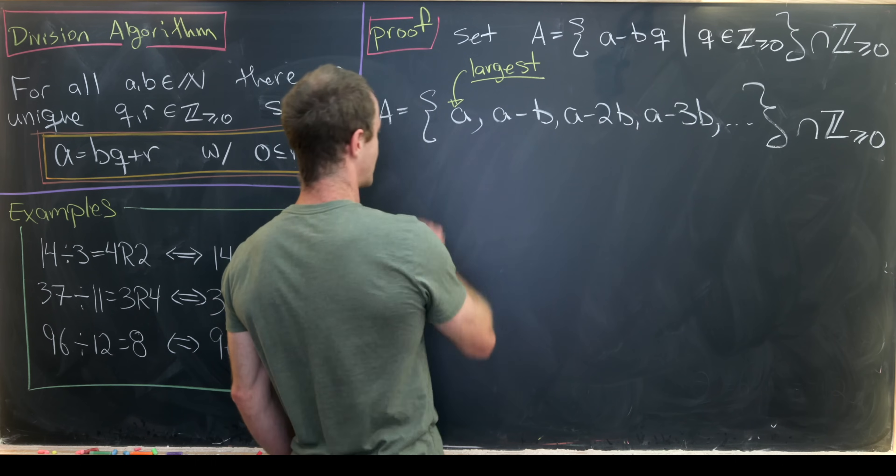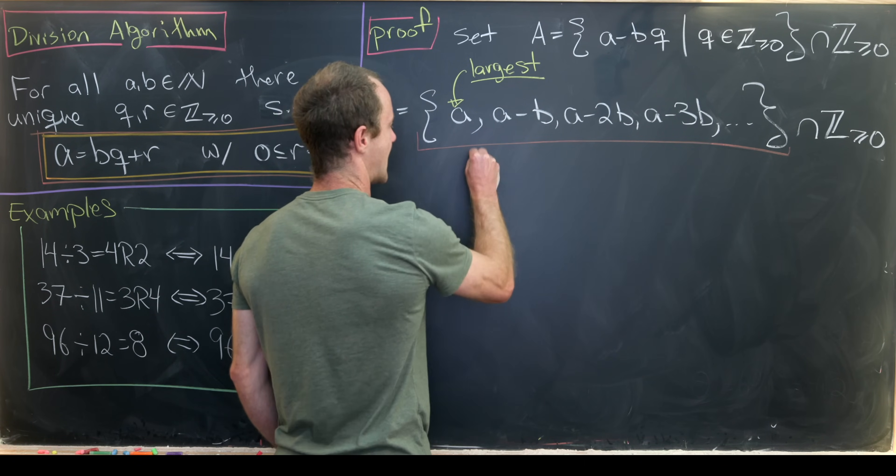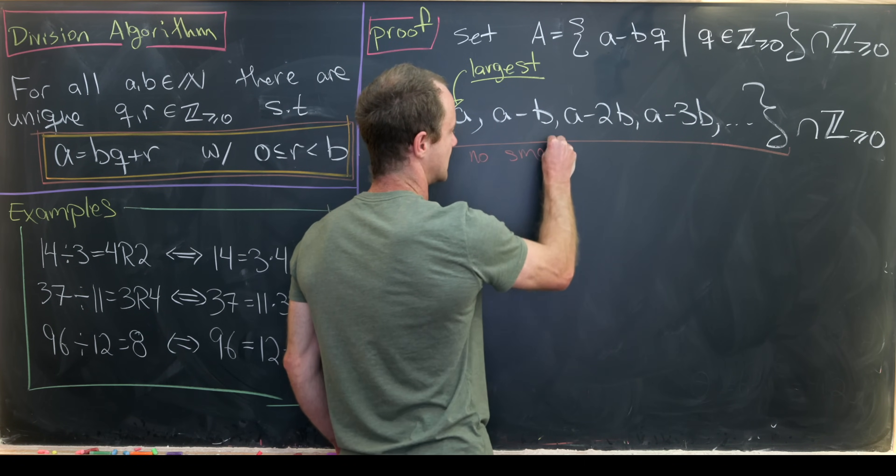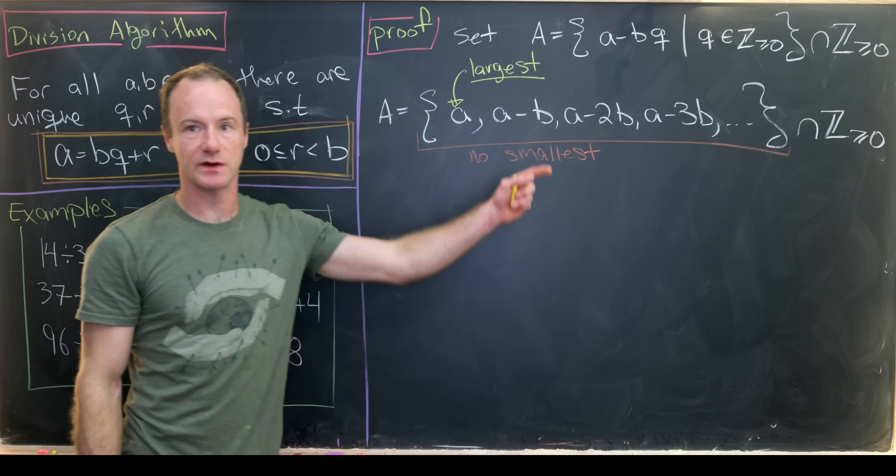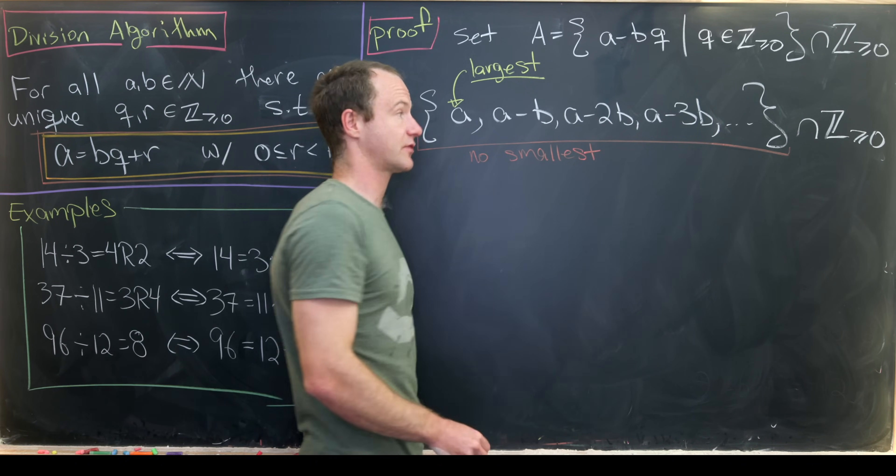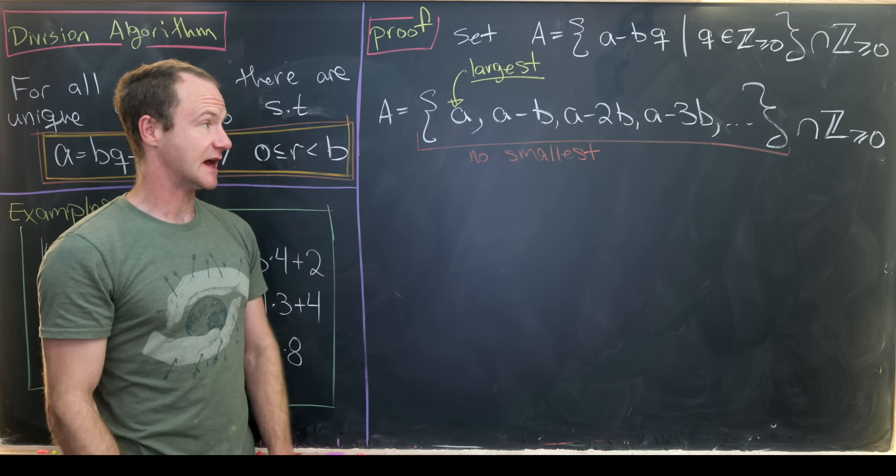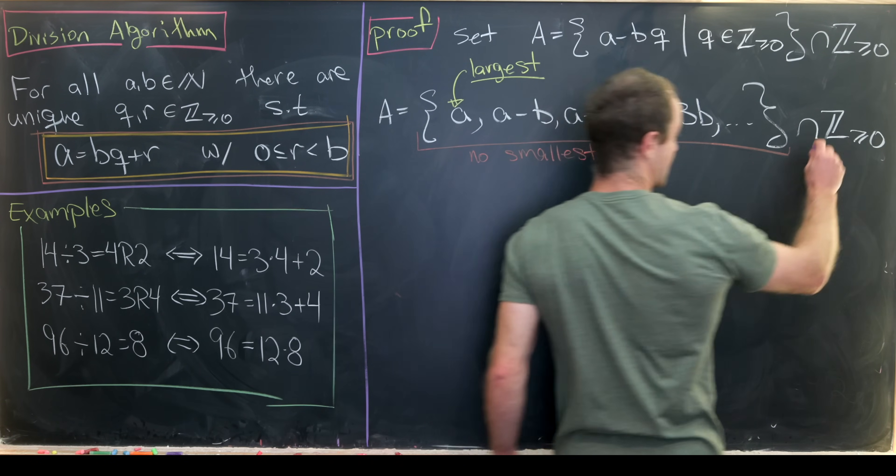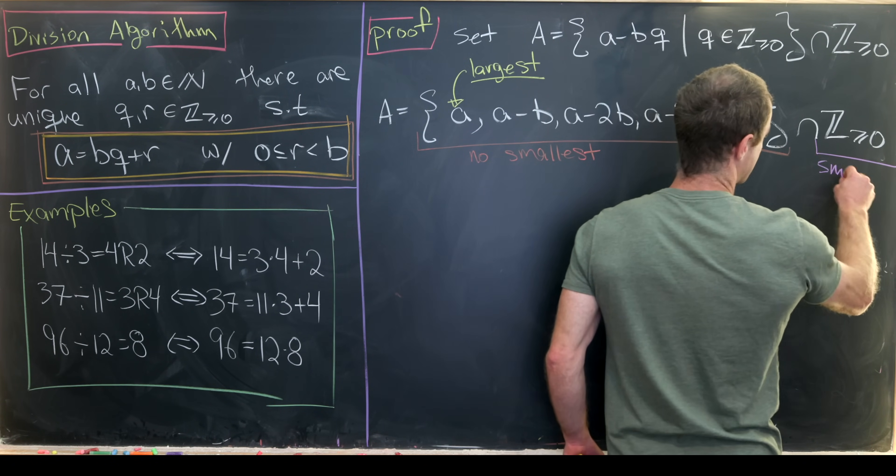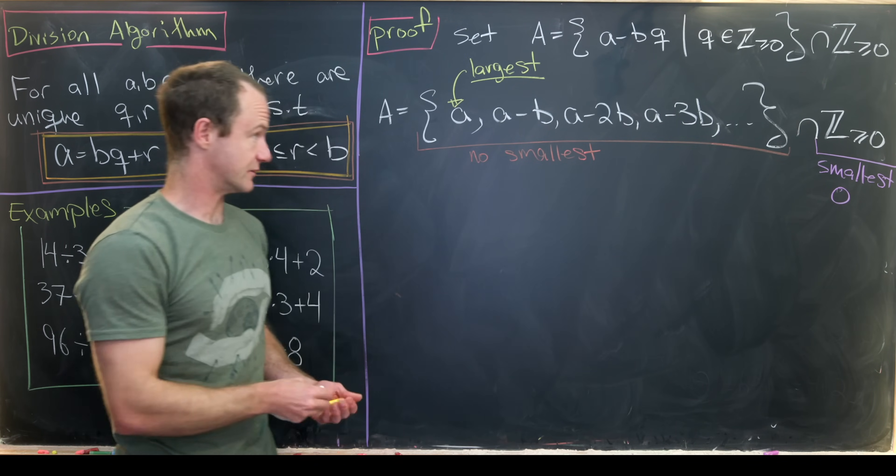So this first set that I have right here has no smallest element, because it keeps going down, right? a minus 3b, a minus 4b, a minus 5b, and so on and so forth.